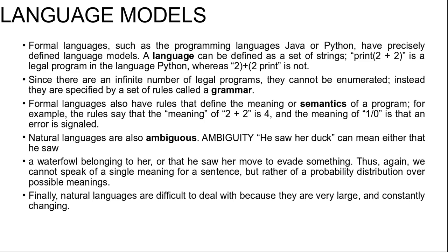Formal languages also have rules that define the meaning or semantics of a program. For example, the meaning of 2+2 is 4, and the meaning of 1/0 is that an error is signaled. Natural languages such as English or Spanish cannot be characterized as a definite set of sentences. Therefore, it is more fruitful to define a natural language model as a probability distribution over sentences rather than a definitive set — asking for the probability P(S = words) rather than asking if a string is or is not a member of the language.